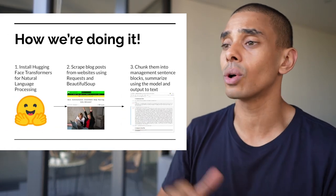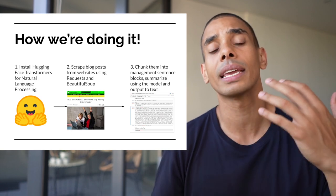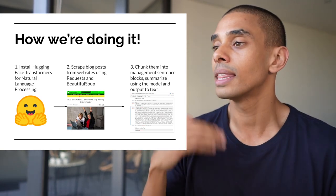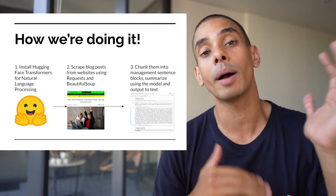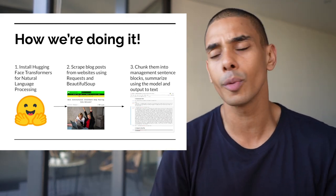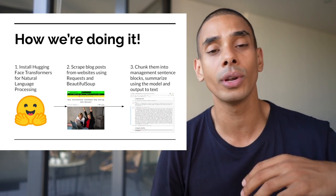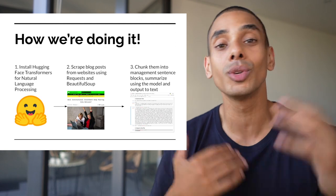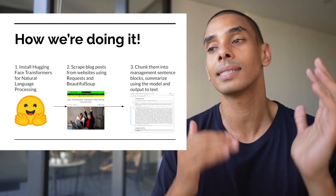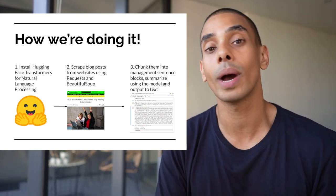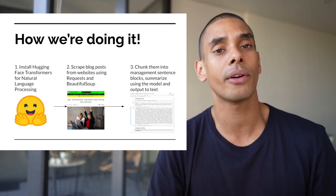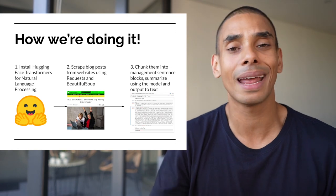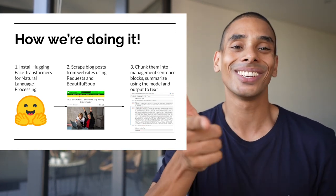First up, we're going to install HuggingFace Transformers, which gives us a whole bunch of natural language processing capability. Then we're going to scrape a blog post from the web using Beautiful Soup — we'll try HackerNoon and Towards Data Science as examples. We'll chunk that text into sentences, pass it through to our summarization model, and push the output to a text file. Ready? Let's get to it.